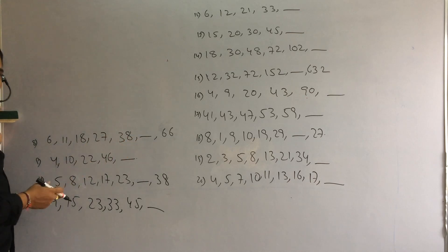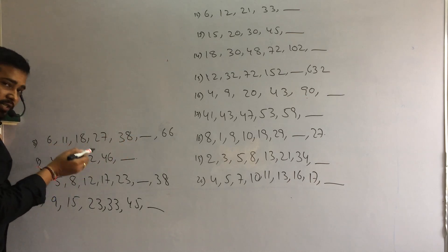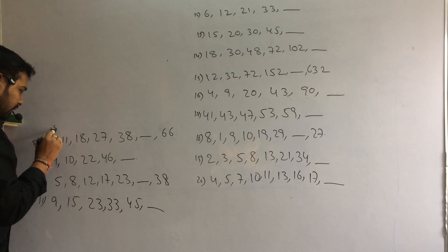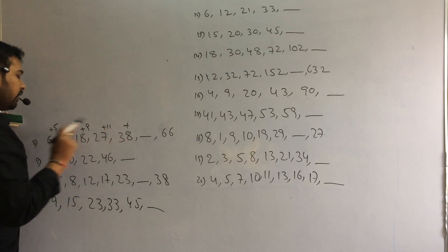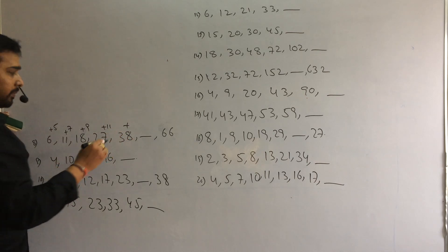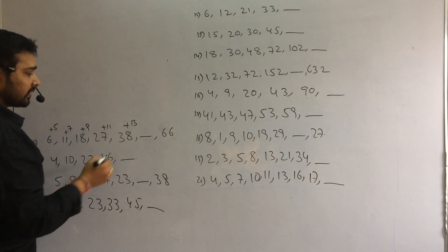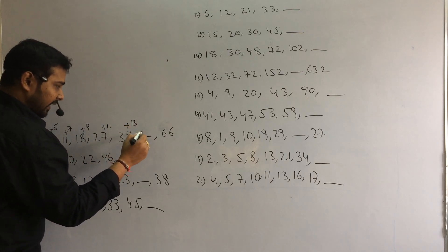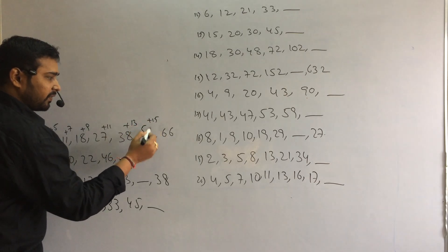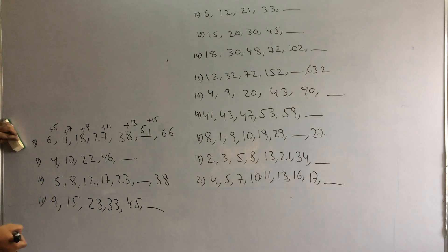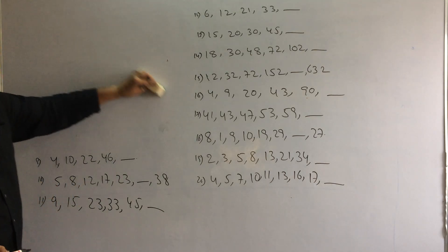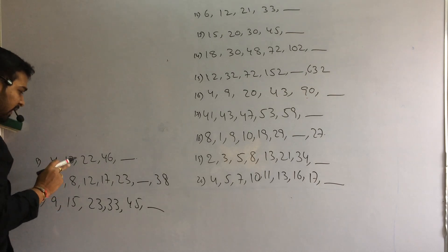Next. Here also difference is very normal. Some additions or subtractions. So here difference is plus 5, plus 7, plus 9, plus 11. 5, 7, 9, 11, they are odd numbers. So add 13 to 38. If you add 13 to 38, answer is 51. 51 plus 15, 66 is your answer. So logically, odd numbers increase in order.